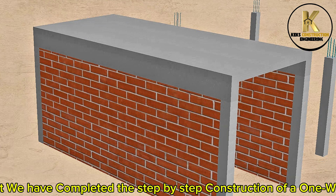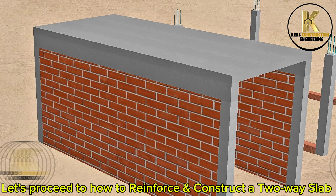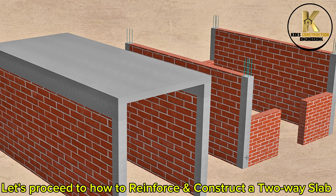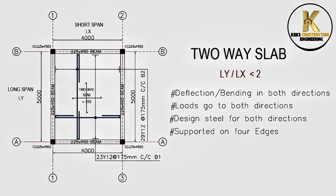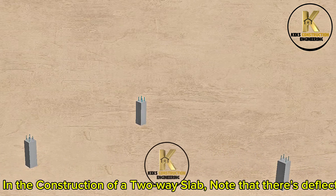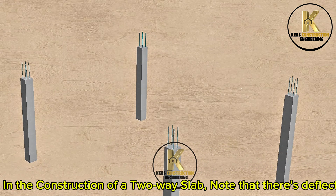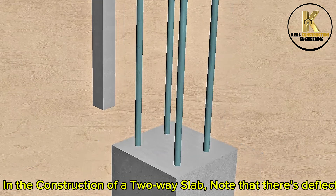Now that we have completed the step-by-step construction of a one-way slab, let's proceed to how to reinforce and construct a two-way slab. Read the drawing. In the construction of a two-way slab, note that there is deflection and bending in both directions. Hence, supports are provided at the four edges of the slab for proper transmission of load.